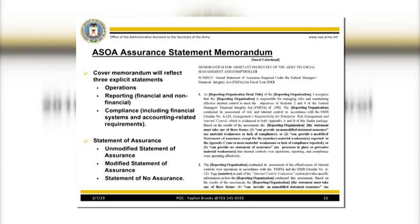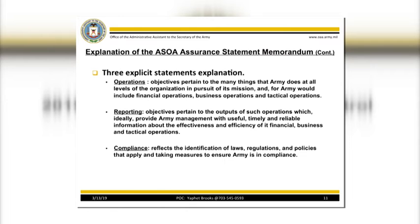Each organization's cover memo will reflect three explicit statements, which will come in three different forms of assurance. The three explicit statements are: operations, which will include financial operations, business operations, and tactical operations; reporting, which pertains to the outputs of such operations; and compliance, which reflects the laws, regulations, and policies to ensure Army is in compliance.